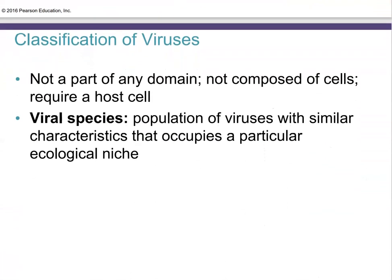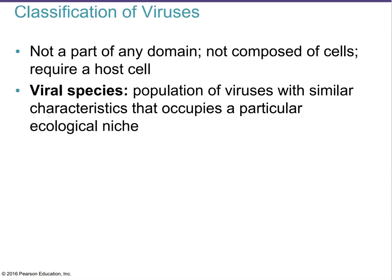Viruses are not part of any domain because they're not really placed in the tree of life — they're not considered true life. On the other hand, we do know that we can kill a virus, so if we can kill it, it must have been alive before. That's a controversial issue. Because they're not composed of cells, they are not classified in any domain or kingdom. We do have viral species, based on the genetic material they carry — populations of viruses with similar characteristics occupying a particular ecological niche. Nowadays, viruses are categorized primarily by their genetic material.